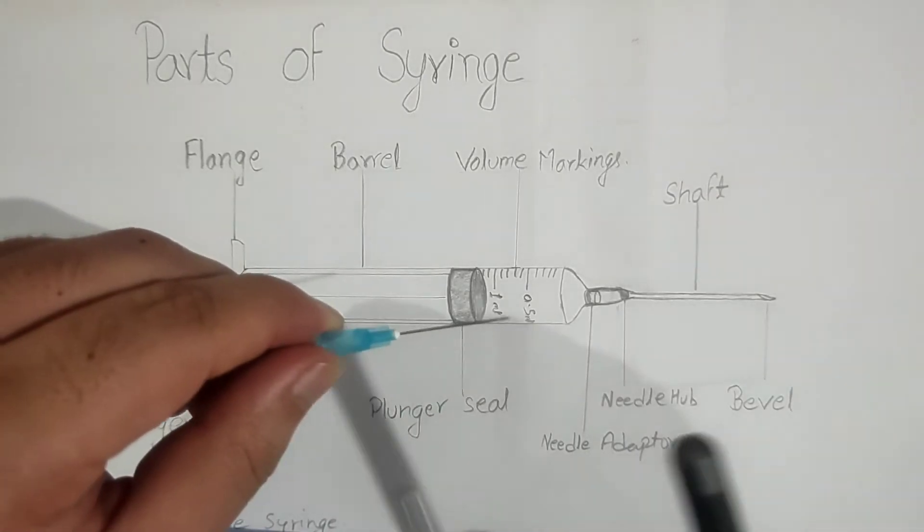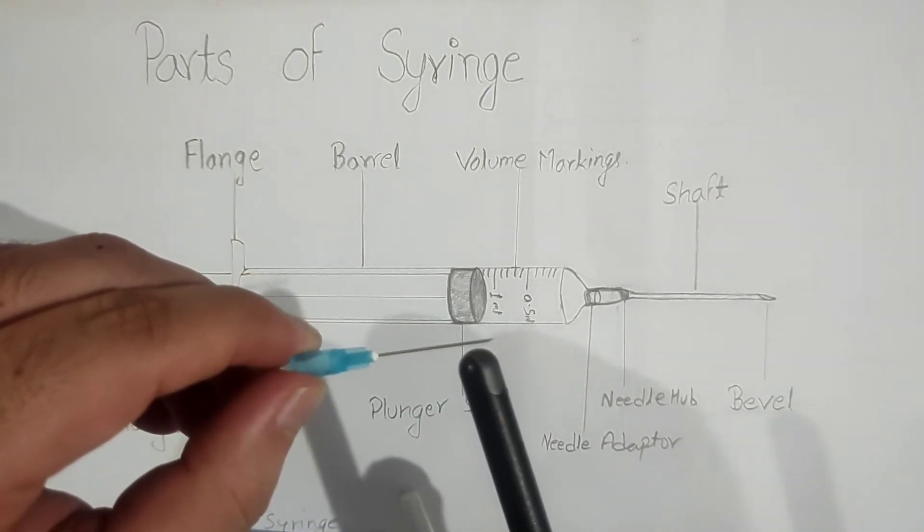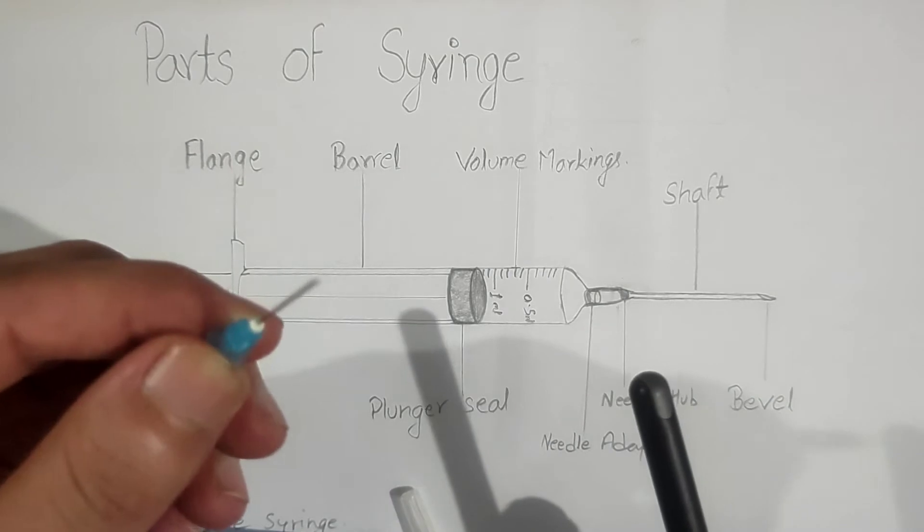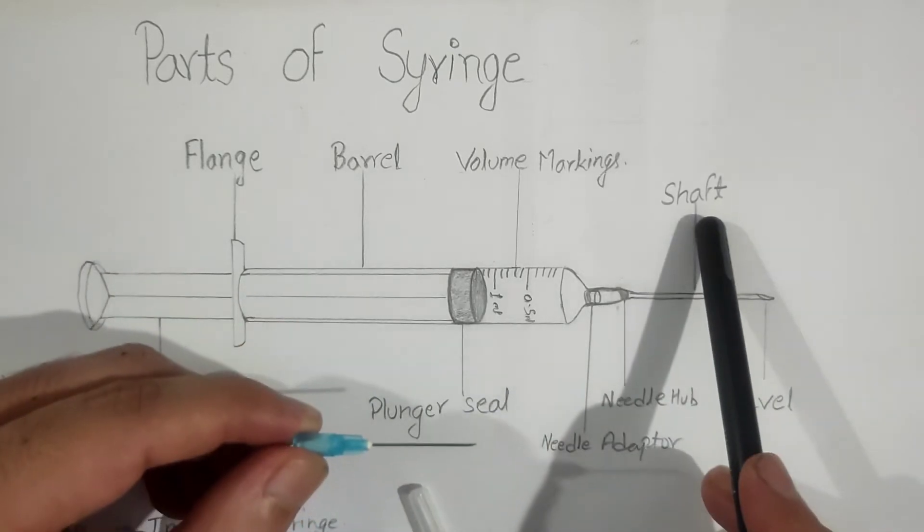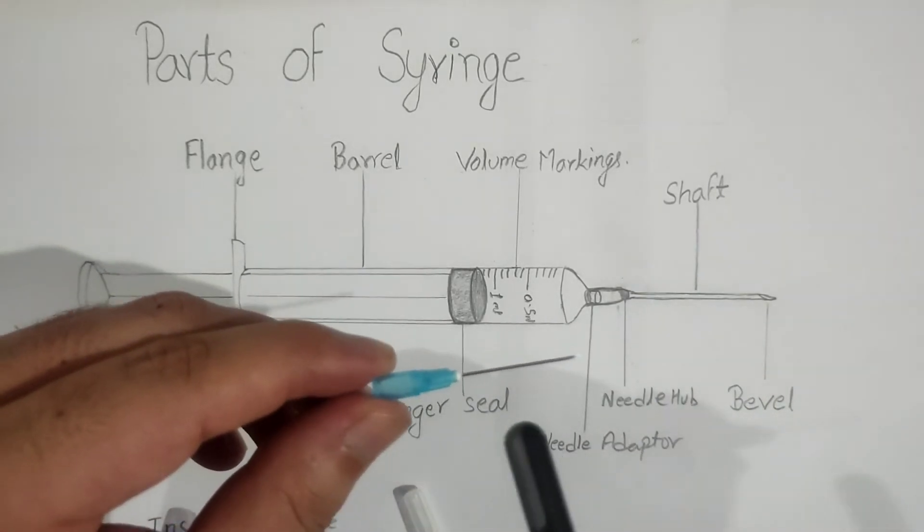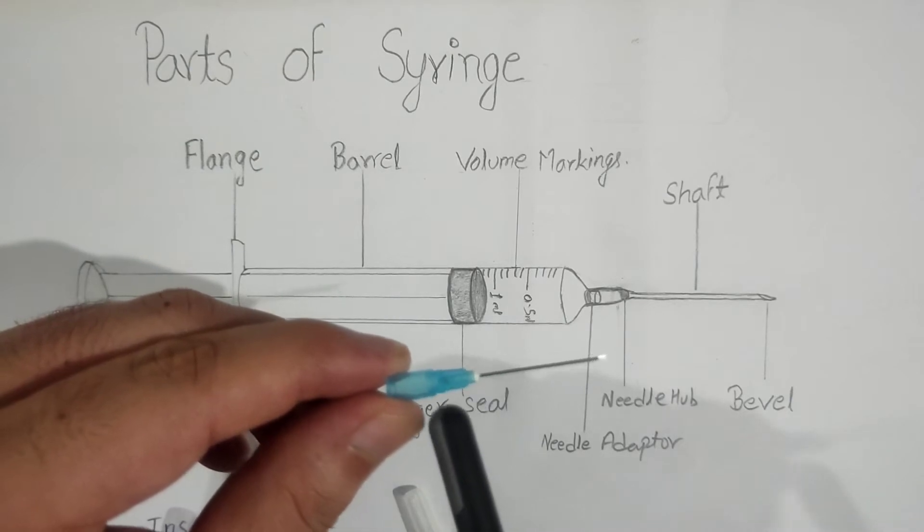The body part which is made up of stainless steel is known as the shaft, and the stainless steel portion which is attached with the plastic part is